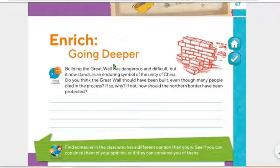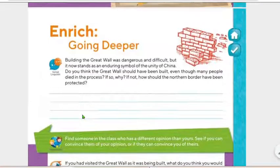Entonces, ¿qué dice aquí? Construir en la Gran Muralla fue peligroso y difícil, pero ahora es un símbolo de la unidad en China. ¿Crees tú que la muralla china debió haber sido construida, inclusive, aunque mucha gente murió en el proceso? Si sí, ¿por qué? Si piensas que no, ¿cómo crees que las fronteras del norte hubieran sido protegidas? Si tú dices que no debieron haber construido la muralla china. Entonces, aquí escribes tu respuesta.